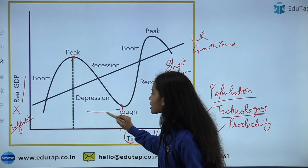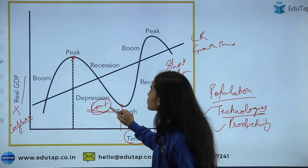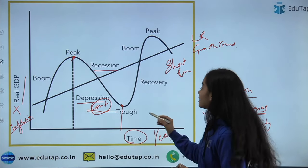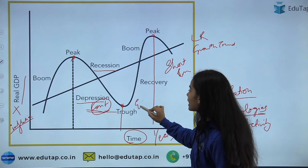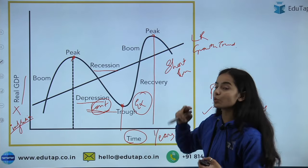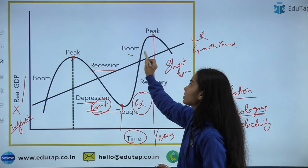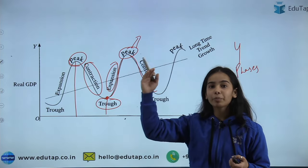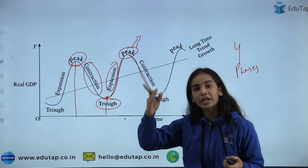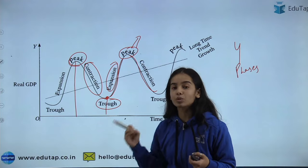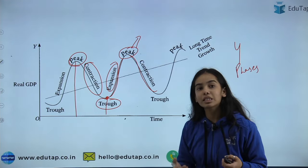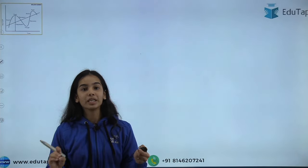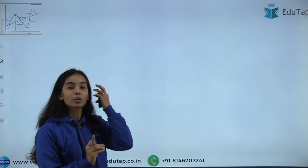The contraction phase is divided into recession and depression. The expansion phase, from the trough to the peak, is divided into two categories: recovery and then boom. So the business cycle is a continuous process — from the peak you go down, contract, reach the minimum point, then again start expanding and reach the peak. This keeps happening in the short run.